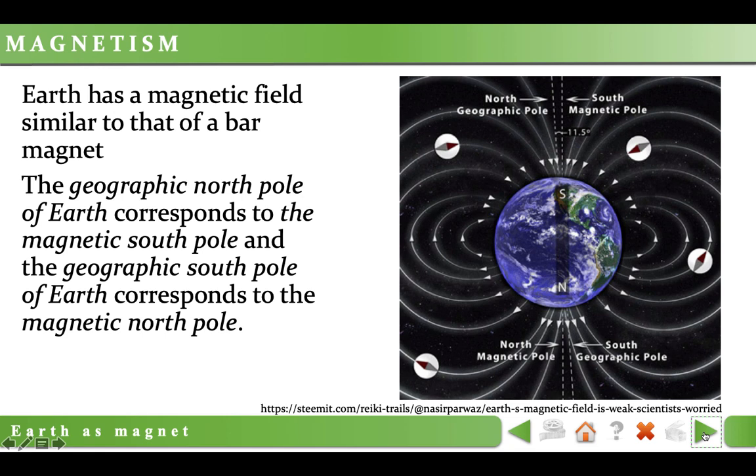Similarly, magnetic north pole of the earth is close to geographical south pole. Geographical poles of the earth are fixed, but magnetic poles are continuously changing their positions. They move a few kilometers a year and completely swap places after a while.